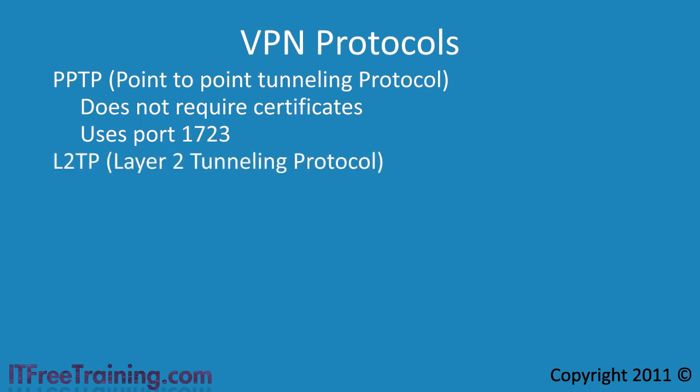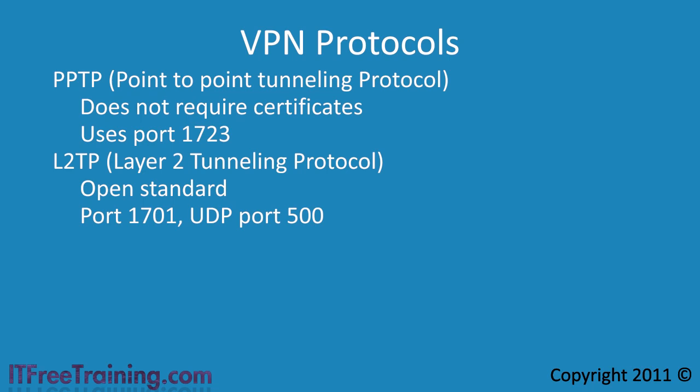Layer 2 Tunneling Protocol is the next type of protocol that Windows 7 supports. This is an open standard so it is supported by other operating systems and devices on the market. It uses IPSec for encryption and thus requires certificates to operate. In order to use L2TP you need to have port 1701 and UDP port 500 open.